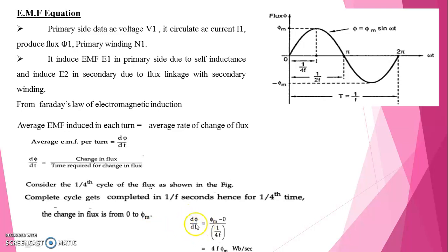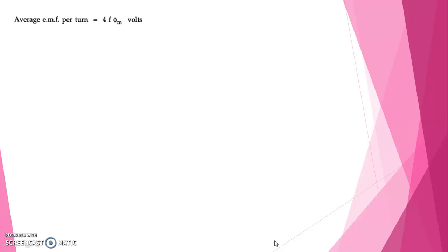So d phi by dt is equal to maximum flux phi m minus 0. The difference of flux is phi m minus 0. And dt is the time duration at which maximum flux occurs, that is 1 by 4f. So we can rearrange which gives 4f phi m Weber per second. Average EMF per turn is equal to 4f phi m volt.